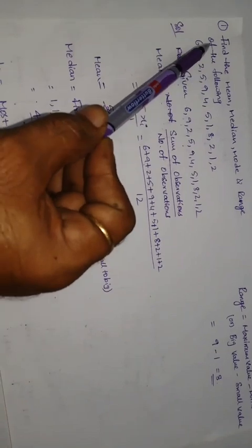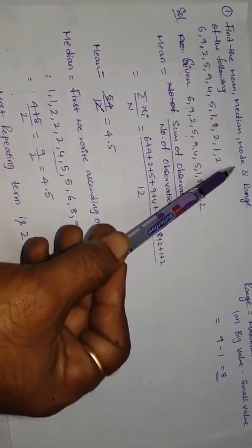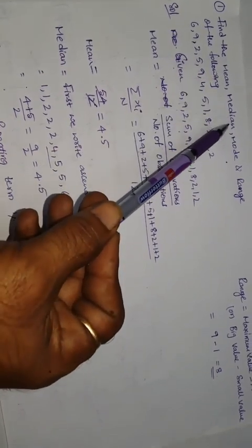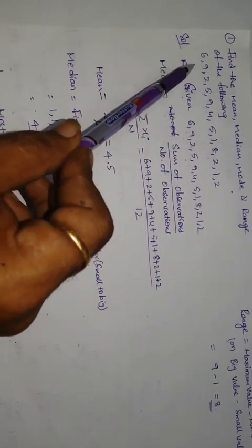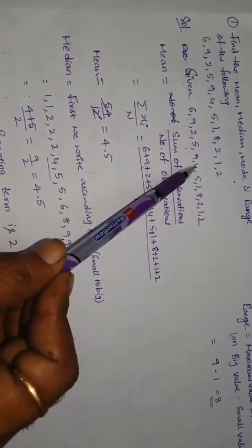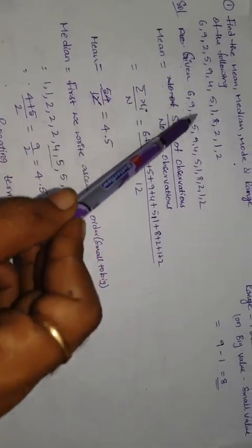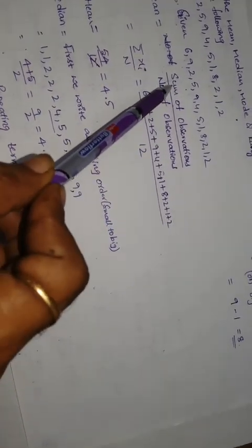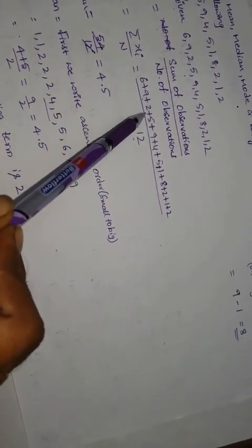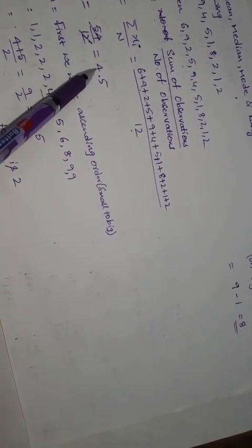Hi students. I have statistics for two more problems. Find the mean, median, mode and range. We have to do these problems. We have a series — this is ungrouped data. Mean equals sum of observations divided by number of observations. We add all observations and divide. 54 divided by 12 equals 4.5. That means the mean is 4.5.